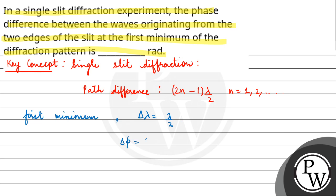is equal to path difference into 2π by λ, so here which is equal to π radians.